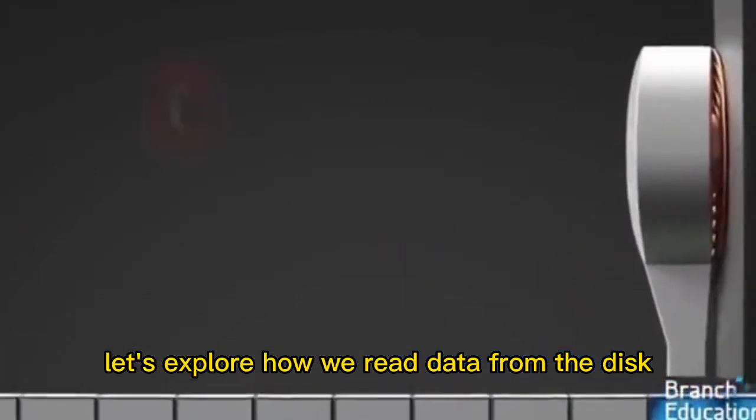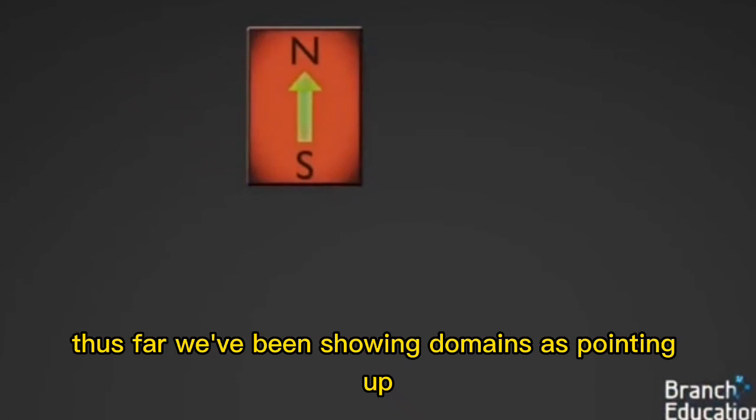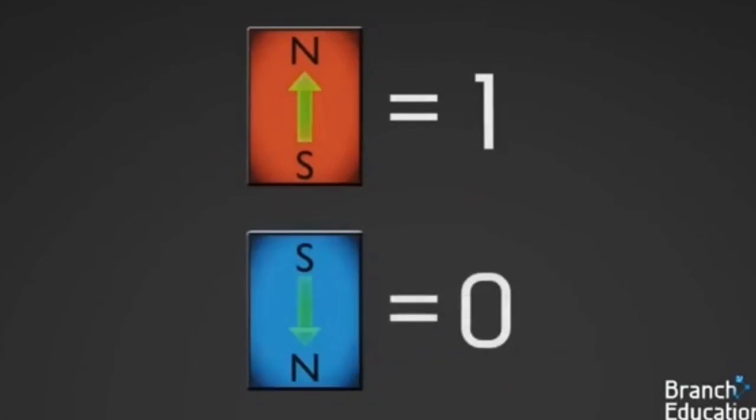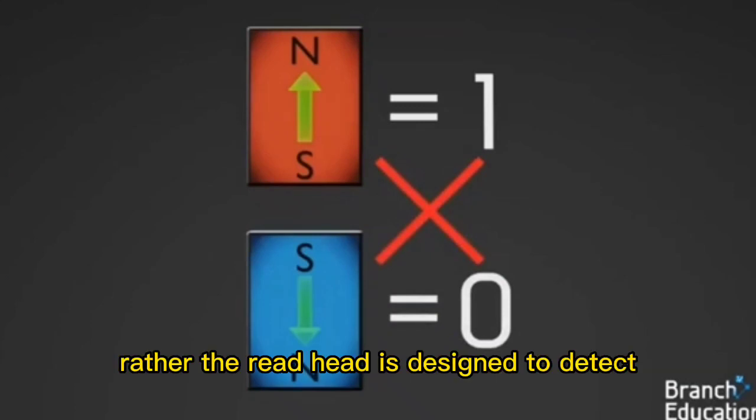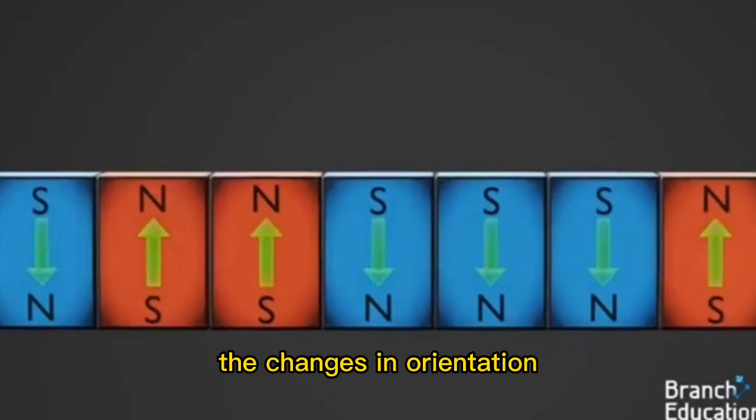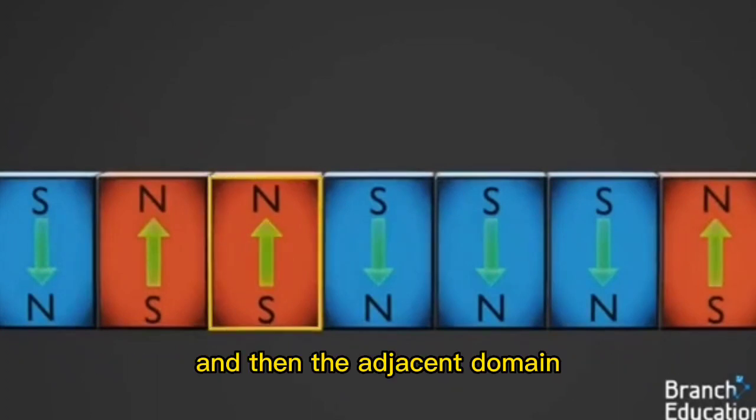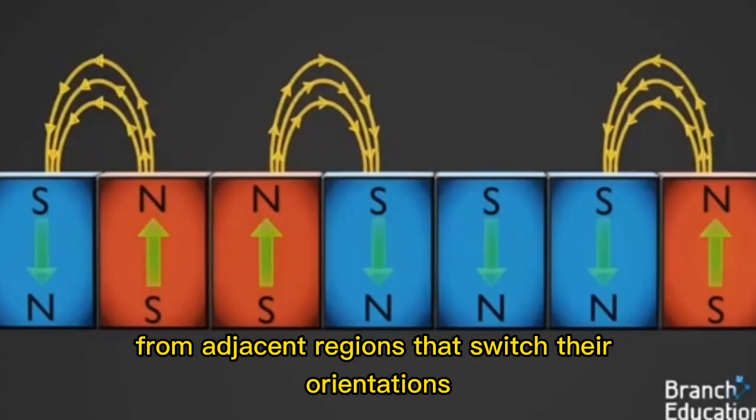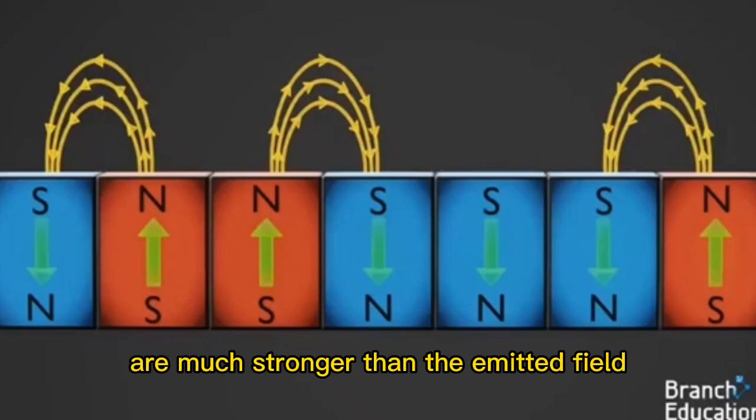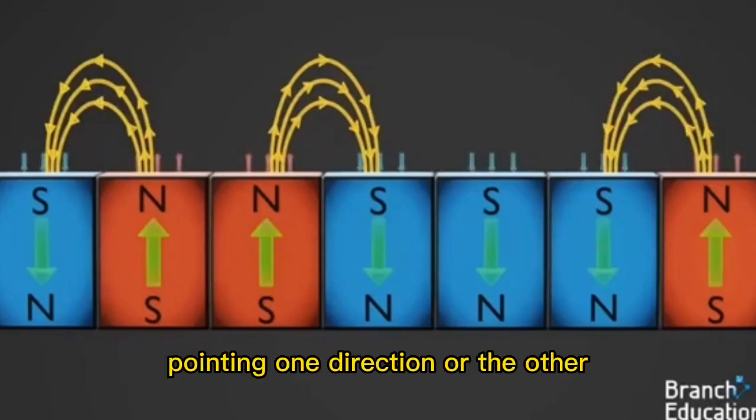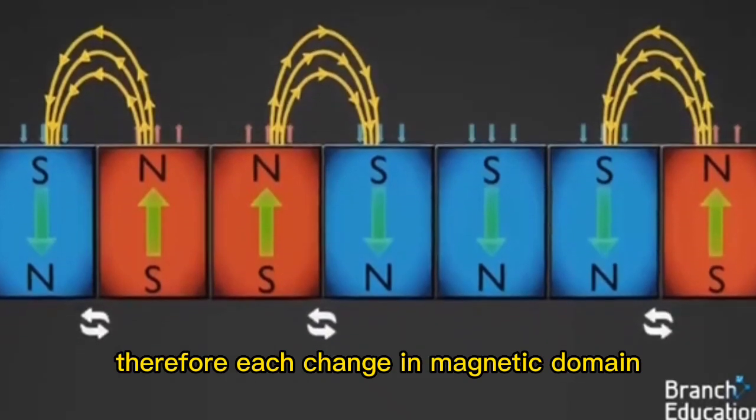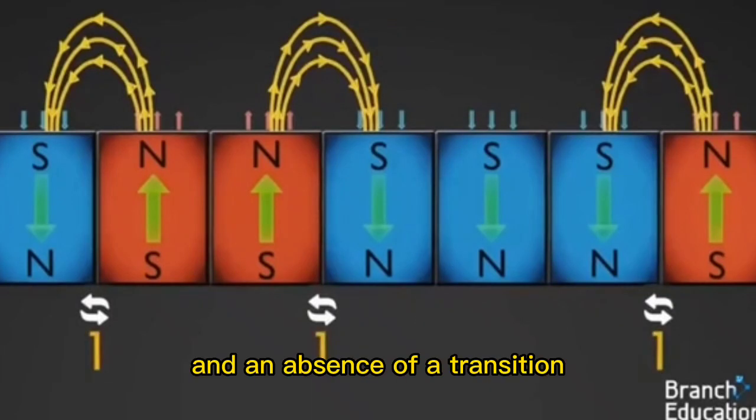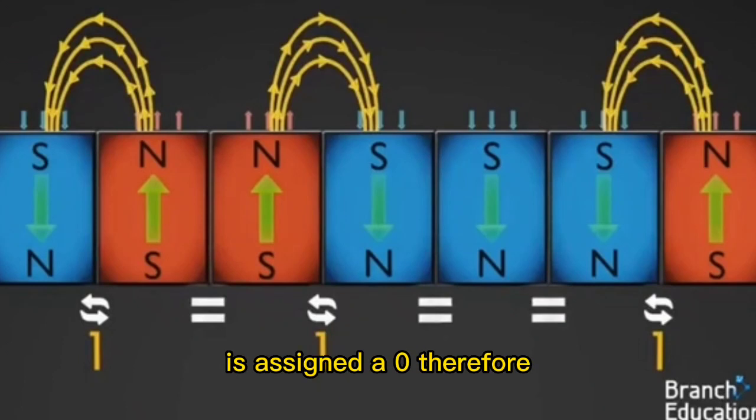Let's explore how we read data from the disk. Thus far, we've been showing domains as pointing up as a binary 1 and pointing down as a 0. While this is conceptually simple, it isn't actually the case. Rather, the read head is designed to detect the changes in orientation from magnetic domains pointing in one direction and then the adjacent domain pointing in the opposite direction. This is because emitted magnetic fields from adjacent regions that switch their orientations are much stronger than the emitted field from just a single domain pointing one direction or the other. Therefore, each change in magnetic domain pointing in one direction to the opposite direction is assigned a 1, and an absence of a transition from one domain to the next is assigned a 0.